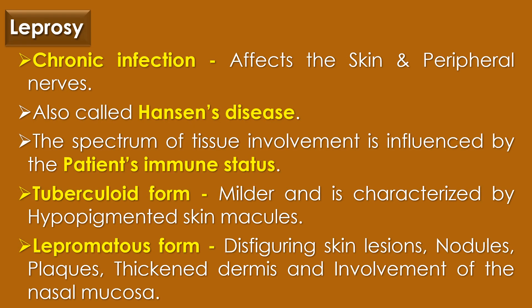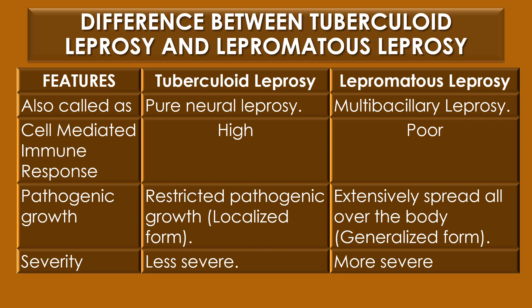Leprosy is a chronic infection that affects the skin and peripheral nerves, also called Hansen's disease. The spectrum of tissue involvement is influenced by the patient's immune status. The tuberculoid form is milder and characterized by hypopigmented skin macules. The lepromatous form is associated with disfigured skin lesions, nodules, plaques, thickened dermis and involvement of the nasal mucosa. Tuberculoid leprosy is also called pure neural leprosy and lepromatous leprosy is also called multibacillary leprosy.